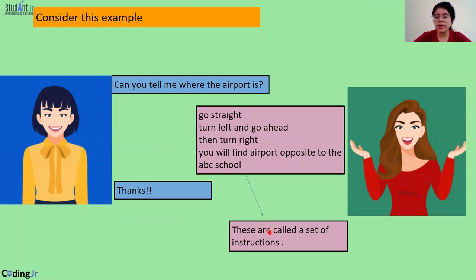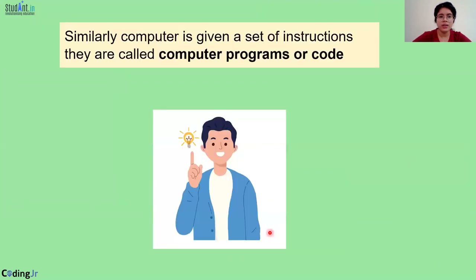Now, if we ask the same thing — where is the airport — from a computer, it will not understand our language. It will not understand English or Hindi. So if I have to ask a question from the computer, I will have to ask it in a language the computer understands. We can give a set of instructions to the computer — we call them computer programs, or code.